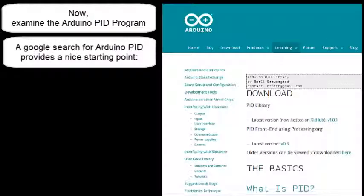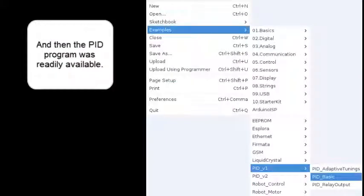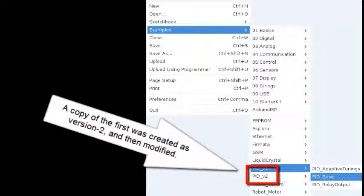Now, examine the Arduino PID program. Google search for Arduino PID provides a nice starting point. This was installed as one of the Arduino examples and then the PID program was readily available. A copy of the first was created as version 2 and then modified.